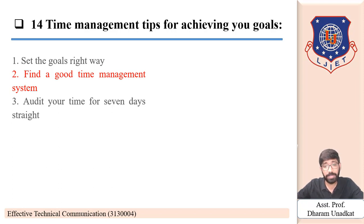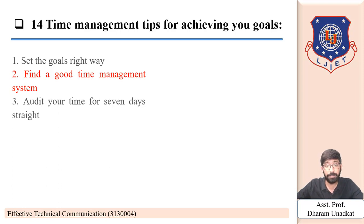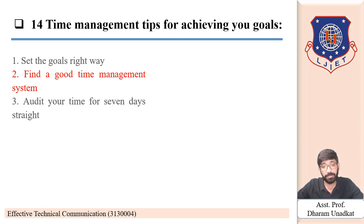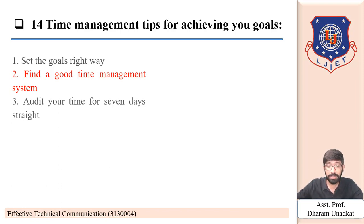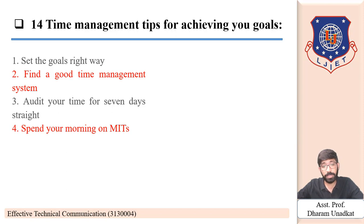The third tip is to audit your time for seven days straight. Assess how you spend your time right now. Record it in a journal or on your phone, split into 30-minute blocks. Note what you got done — was it wasted or well spent? If you use the quadrant system, log which quadrant each activity belongs to, and at the end of seven days tally up the numbers to see where you spent the most time.